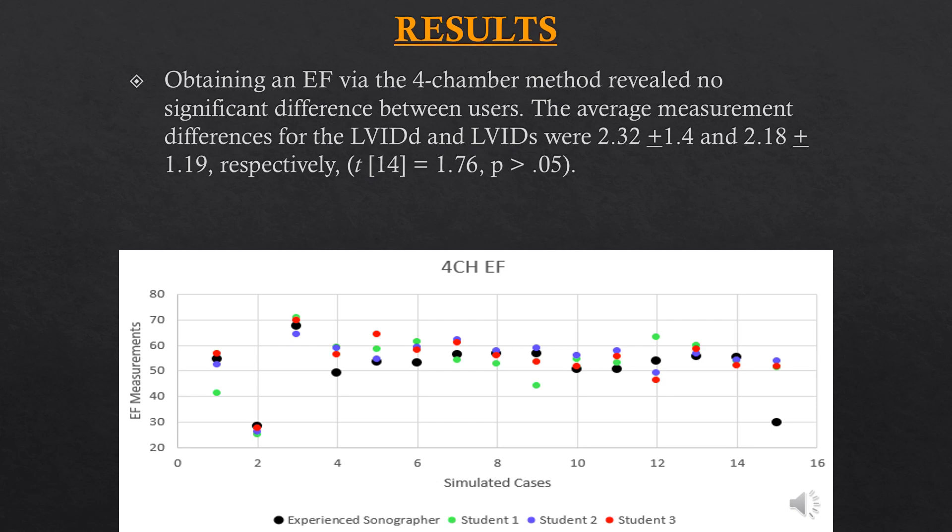This scatter plot shows the ejection fractions measured using the Simpson's method in the 4-chamber view, and as you can see all the different colored dots are fairly close to one another, so there was not a significant difference using this method.